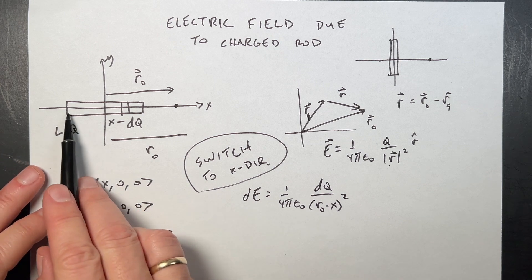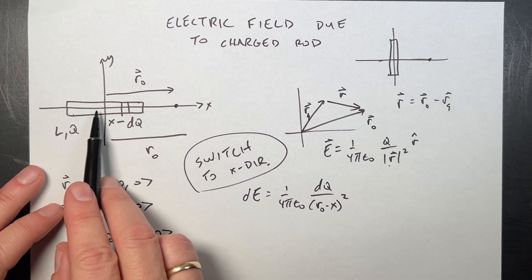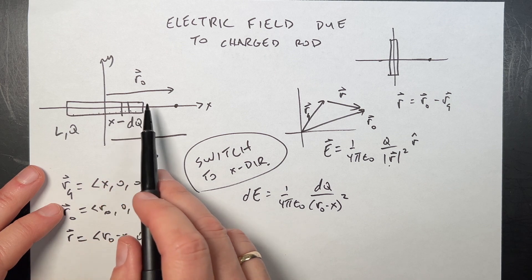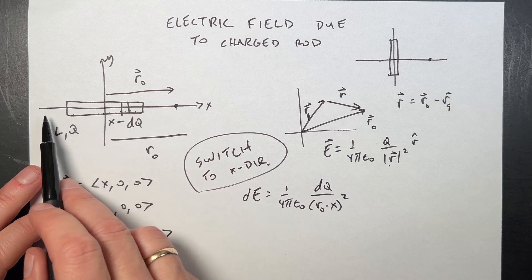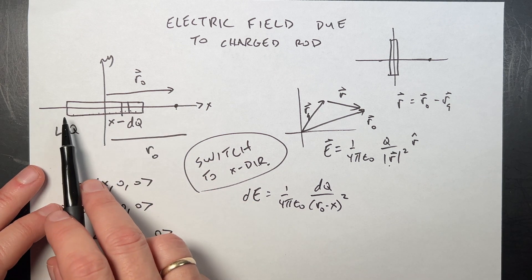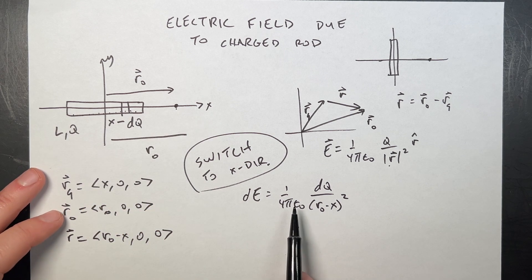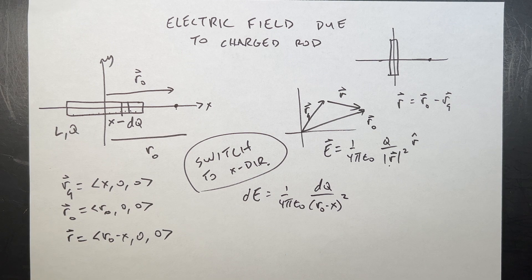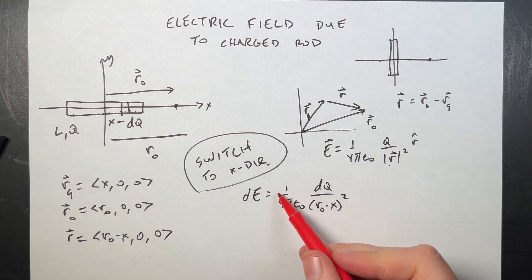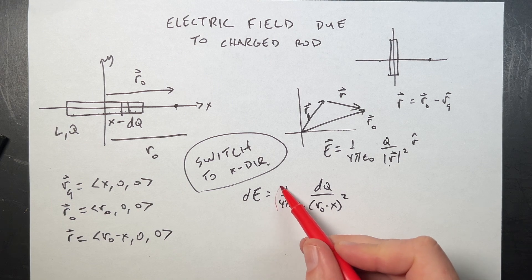And it's in the x direction, so I don't have to worry about that, over this squared. But the distance squared is just the magnitude of this squared, which is only in the x direction. So I just get r0 minus x quantity squared. Now what I want to do is to add up all the contributions of electric field here due to all these pieces. So I want to integrate over the whole length of the rod.